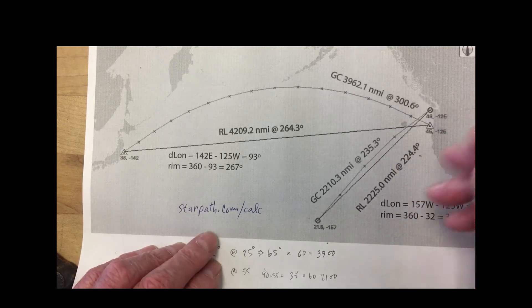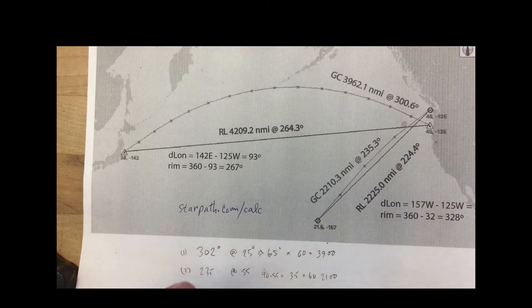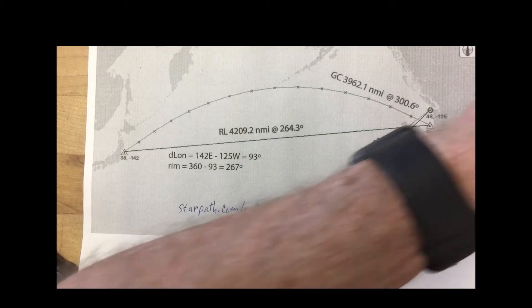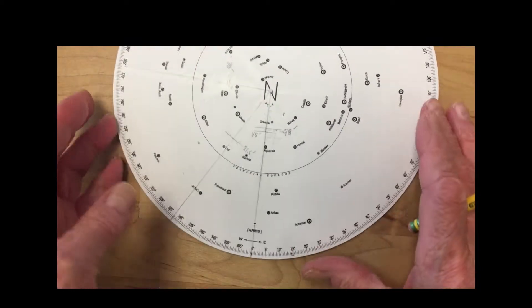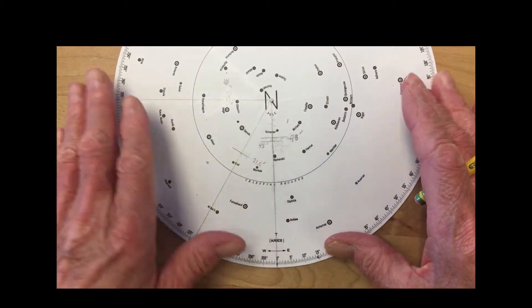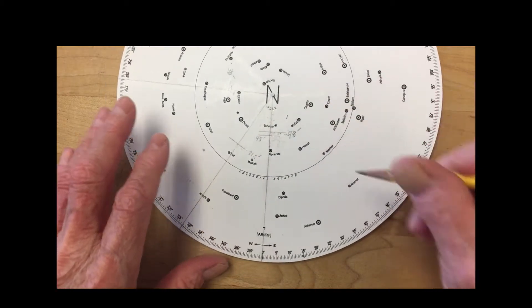And again, we're not discussing necessarily the best way to do great circles. We're talking about solving it with the Starfinder. So here's the main disc, here's the disk we're using, that's the template.